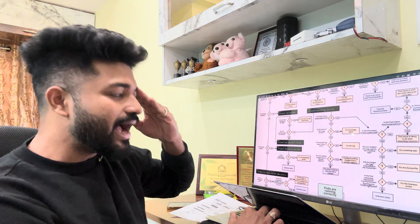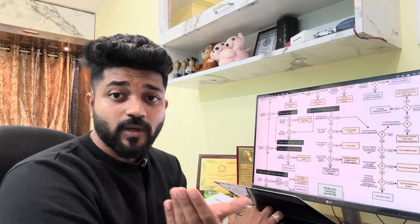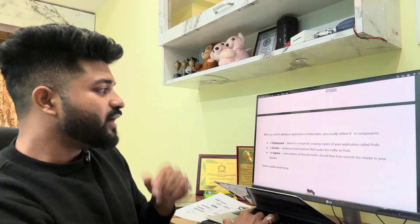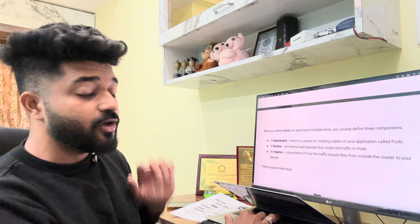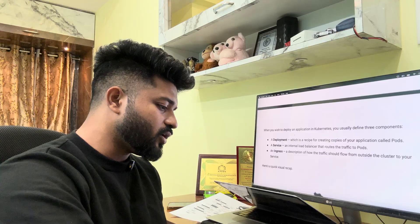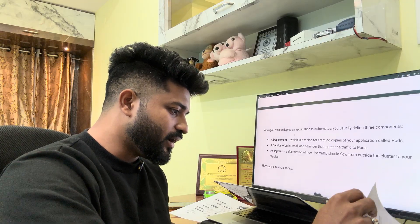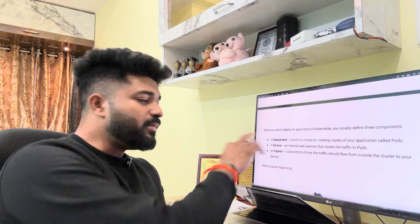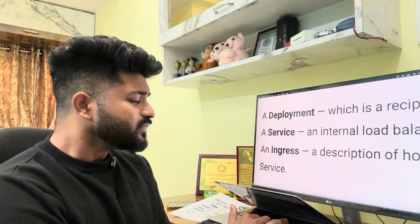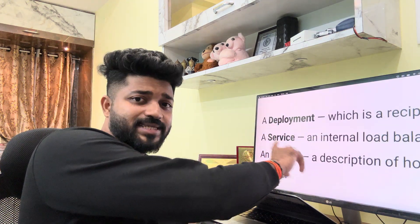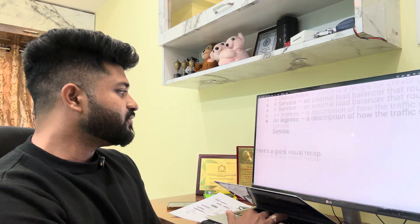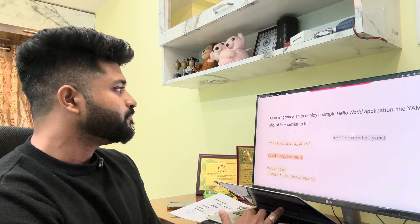The issue may be mounting volumes — fix the crashing app, fix the Dockerfile, fix the liveness probe. These are all real-time issues. Whenever you're in an interview, have this in your head. Moving to the second page: when you deploy on Kubernetes you usually define three components — a Deployment, a Service, and an Ingress — which are very important.